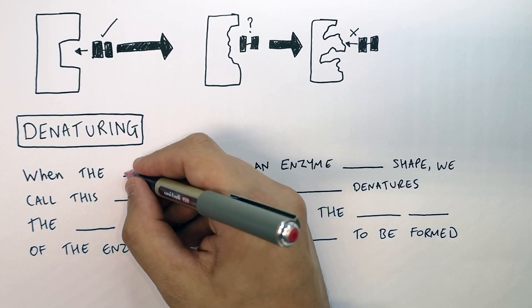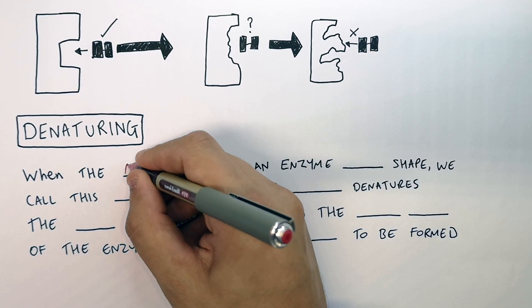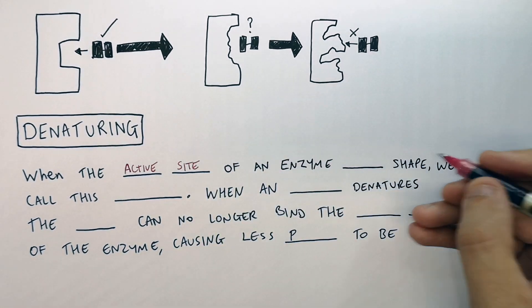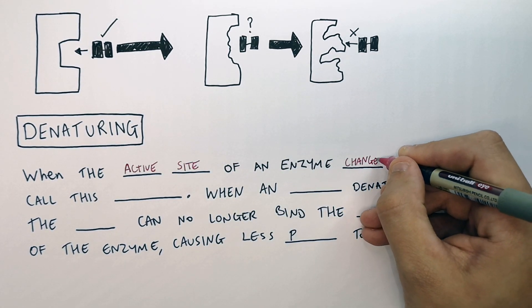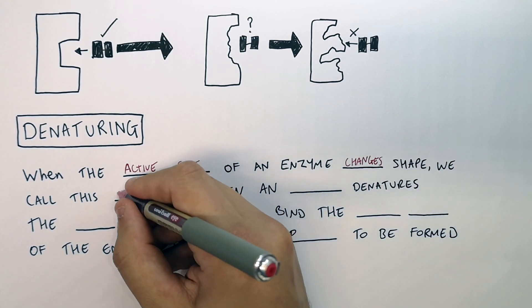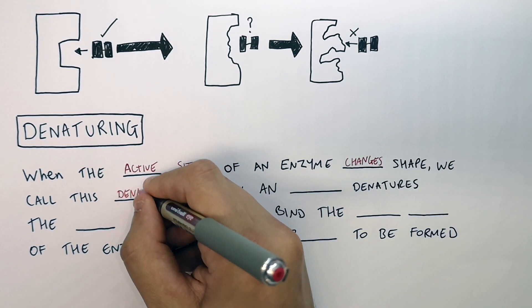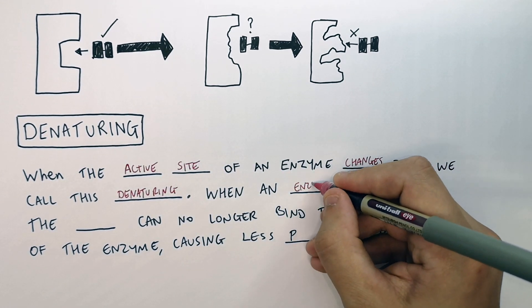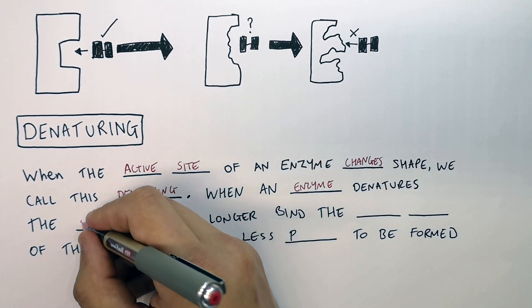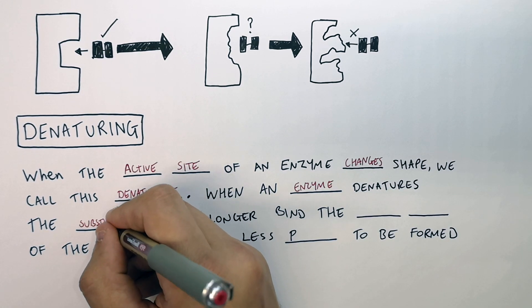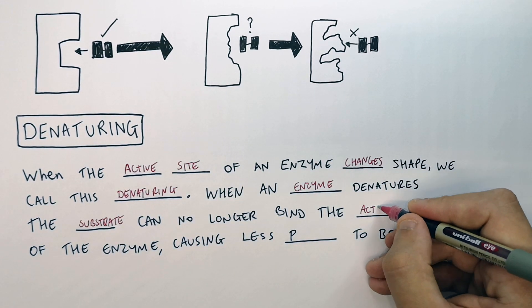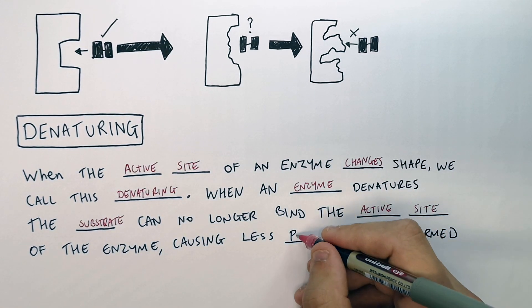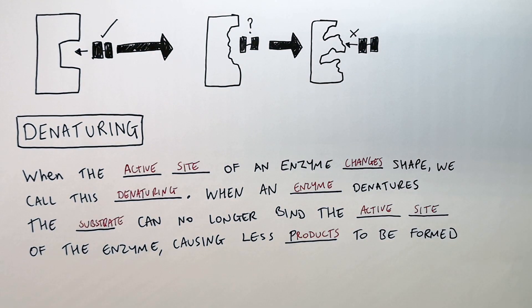When the active site of an enzyme changes shape, we call this denaturing. When an enzyme denatures, the substrate can no longer bind the active site of the enzyme, causing less products to be formed.